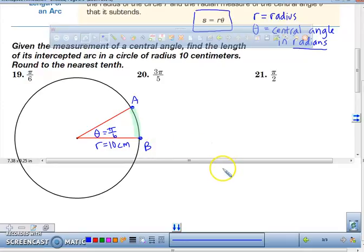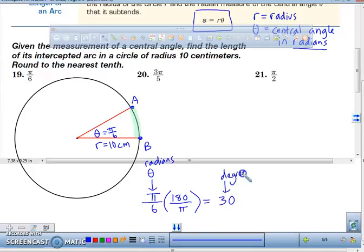Now, some of you might be asking, how did I know to draw, make this drawing the way it is? Because I know that if I took pi over 6 and I multiplied it by 180 over pi, the pi's would cancel out and I would be left with 30. This is the measure of theta in radians. This is the measure of the angle in degrees.